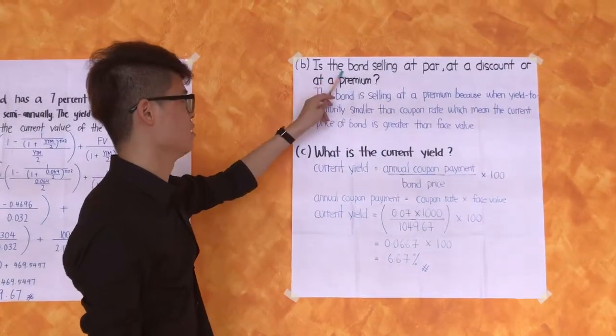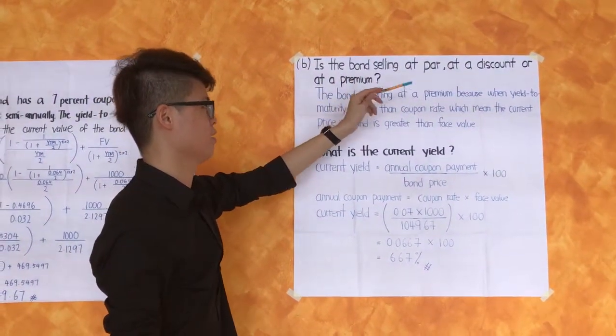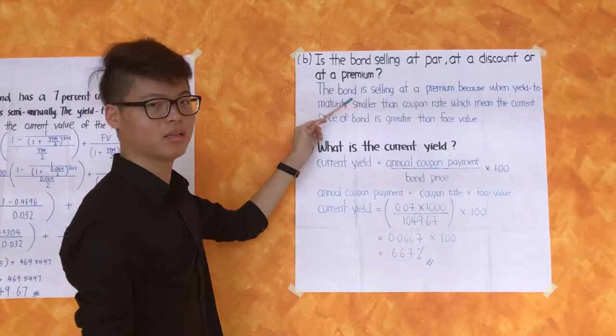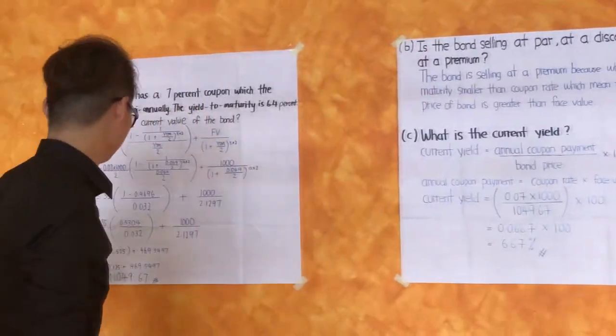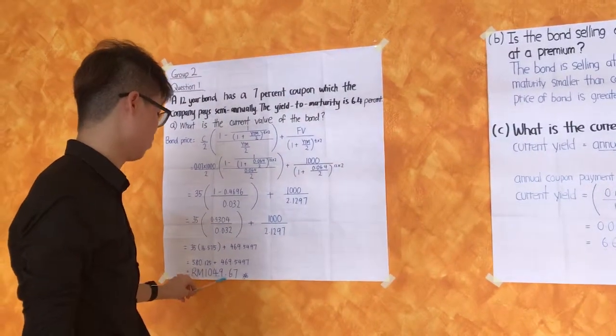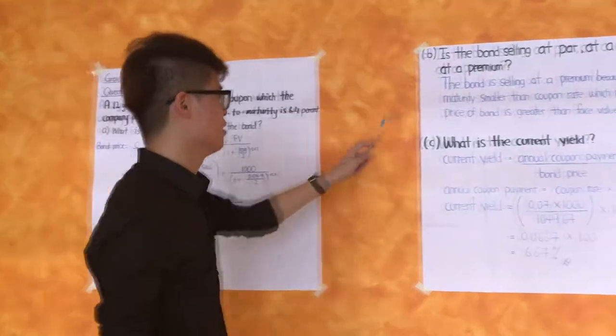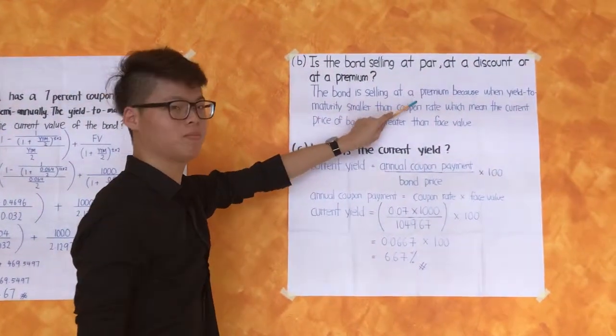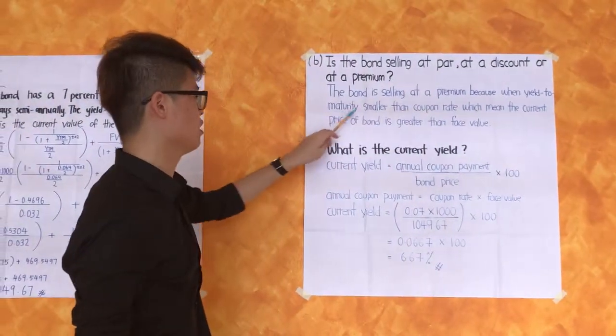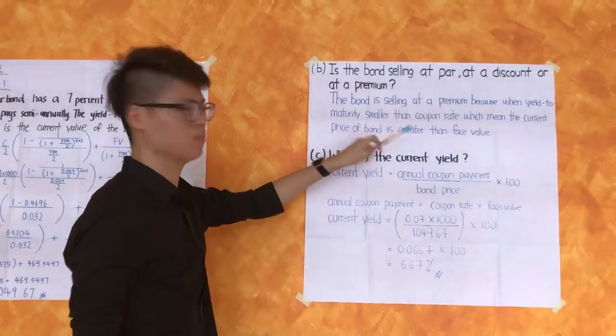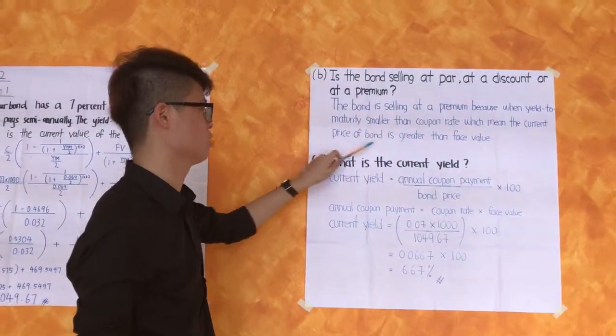Question B: Is the bond selling at par, at a discount, or at a premium? For question A the answer is 1049.67. The bond is selling at a premium because when yield to maturity is smaller than coupon rate, which means the current price of bond is greater than face value.